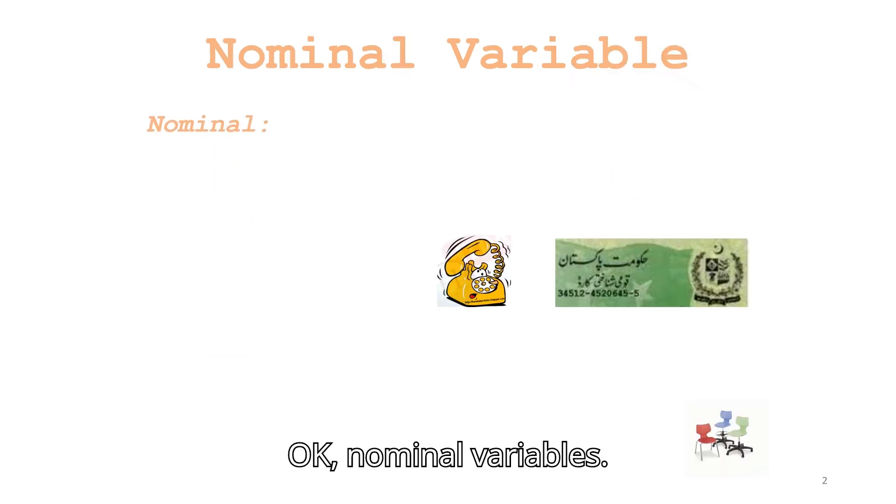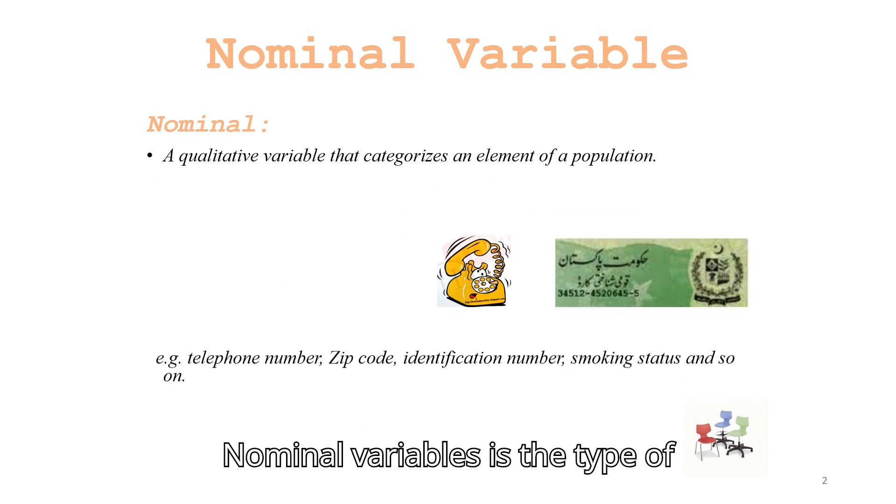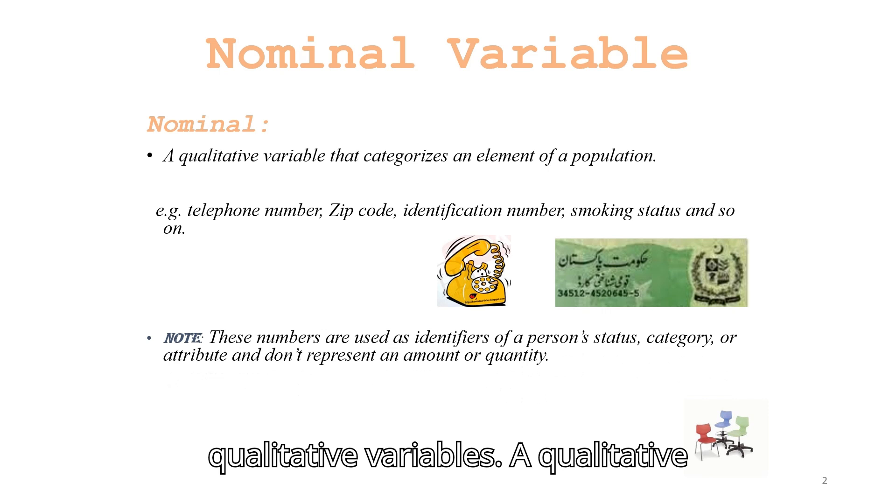Nominal variables are a type of qualitative variable that categorizes an element of a population. For example, telephone numbers, zip code, identification number, smoking status, and so on. Note these numbers are used as identifiers of a person's status, category, or attribute and don't represent an amount or quantity.